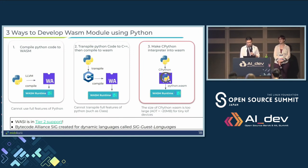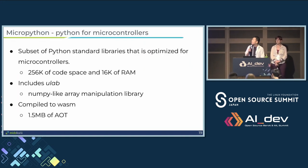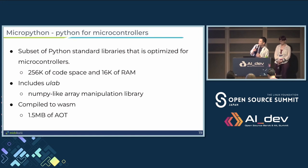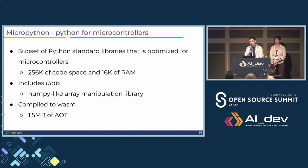How about on IoT devices and embedded? There is MicroPython — Python for microcontrollers. It's a subset of Python standard libraries optimized for microcontrollers, and also includes a NumPy-like library called Ulab. When we compiled this to WASM, it was only 1.5 megabytes. So for MCUs this might be the choice, and maybe for something like Raspberry Pi we can use CPython.